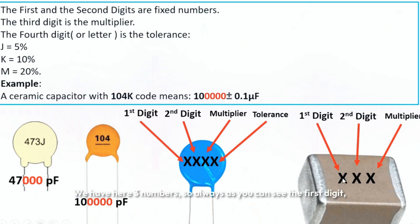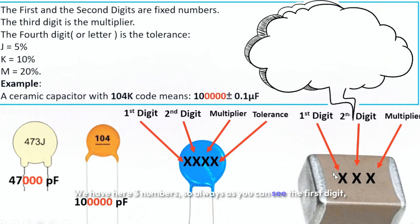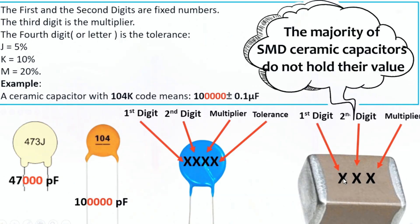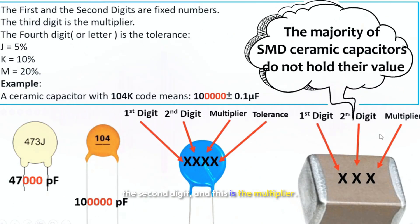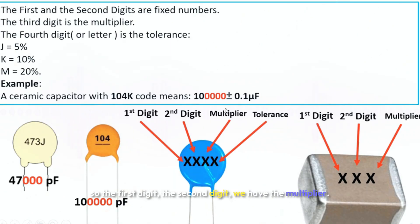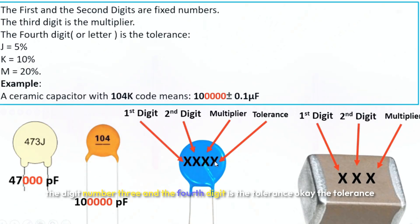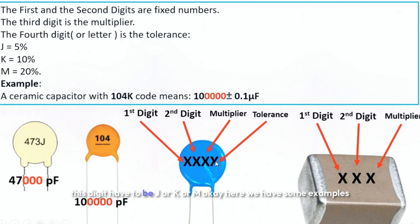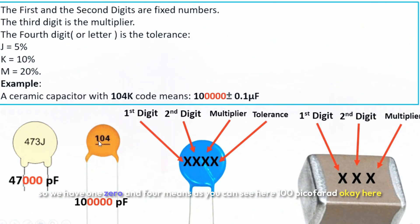So as you can see, with three digits: the first digit, the second digit, and the multiplier. But if we have four digits, the first digit, second digit, and third digit is the multiplier, and the fourth digit is the tolerance. The tolerance digit must be J, K, or M.